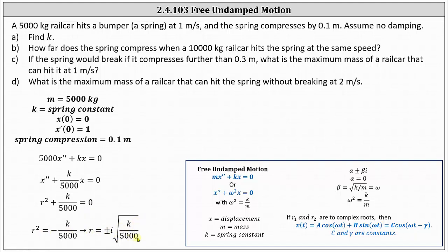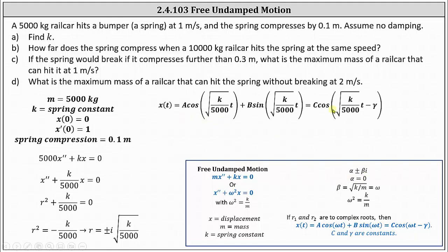Recall when solving these types of equations with complex solutions, we assume the form α ± βi. In this case, α = 0 and β = √(k/5,000). For application problems, the general solution often uses ω instead of β, where ω = √(k/m). With two complex roots, the general solution is x(t) = A·cos(ωt) + B·sin(ωt), which can also be expressed as C·cos(ωt − γ). Since α = 0, e⁰ = 1, so no exponential factor appears.